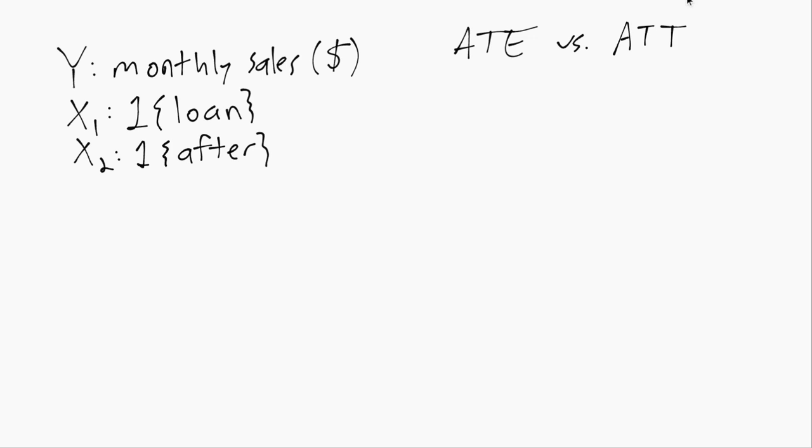Which is the ATT. So the ATE is the unconditional expectation of the treated outcome minus untreated outcome. In this case, the treated outcome is what would the business's monthly sales have been in the parallel universe where they do receive a loan.